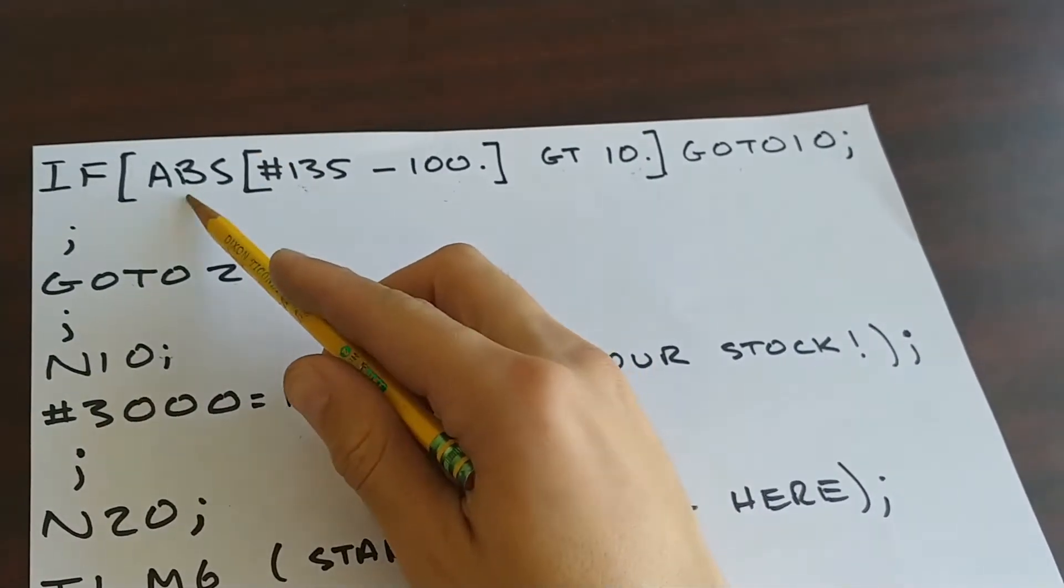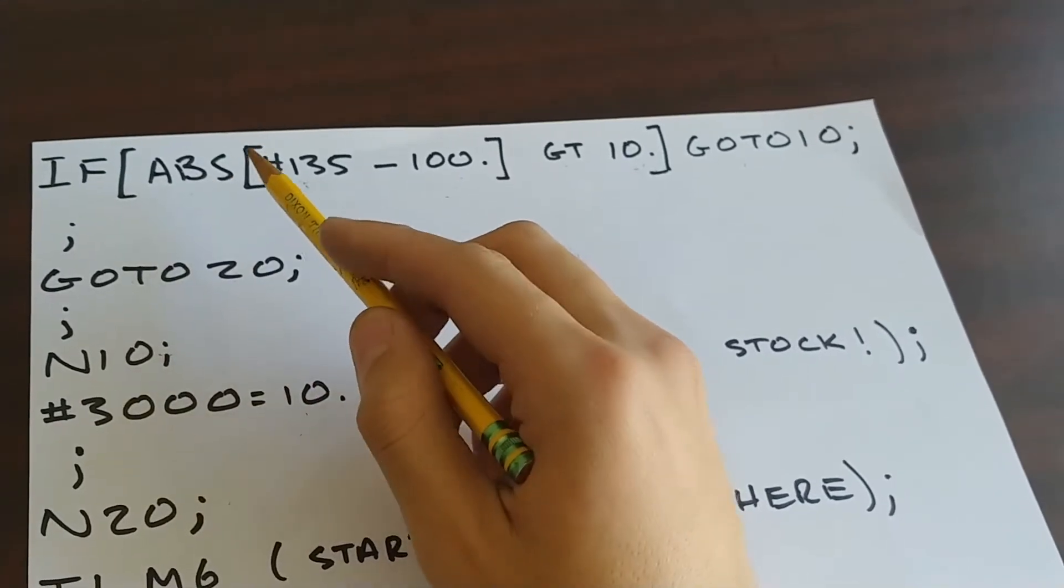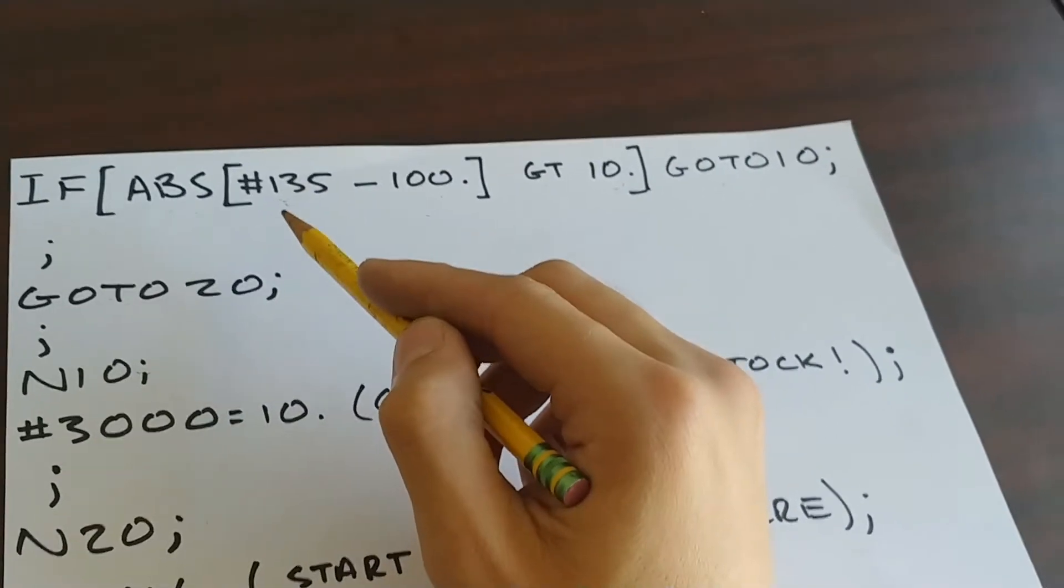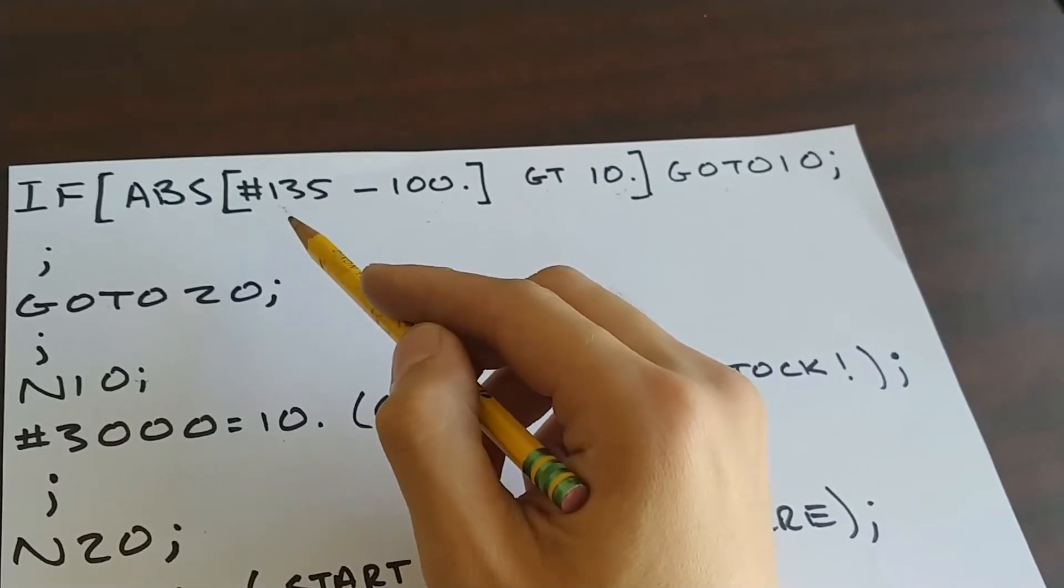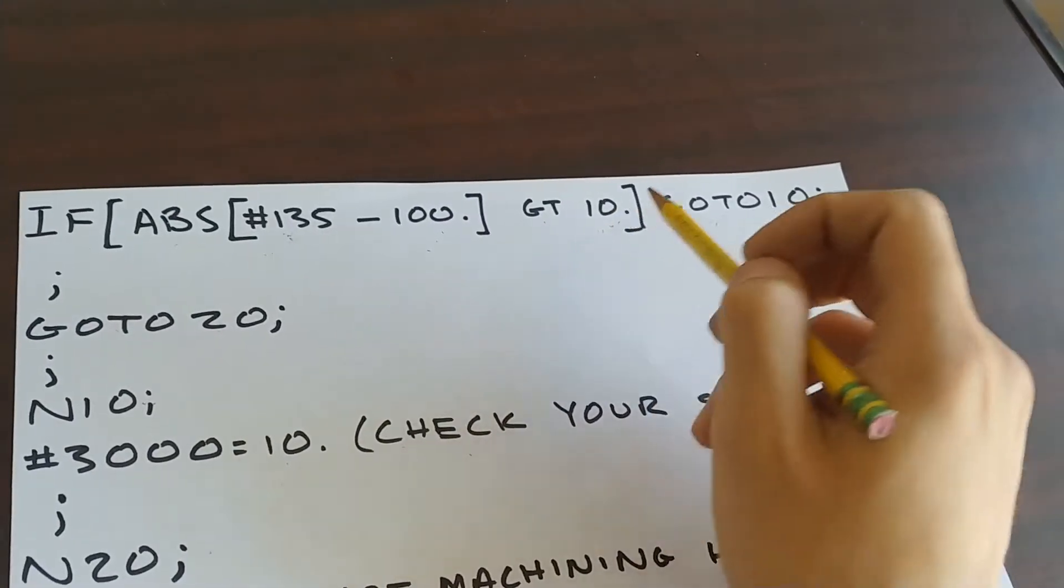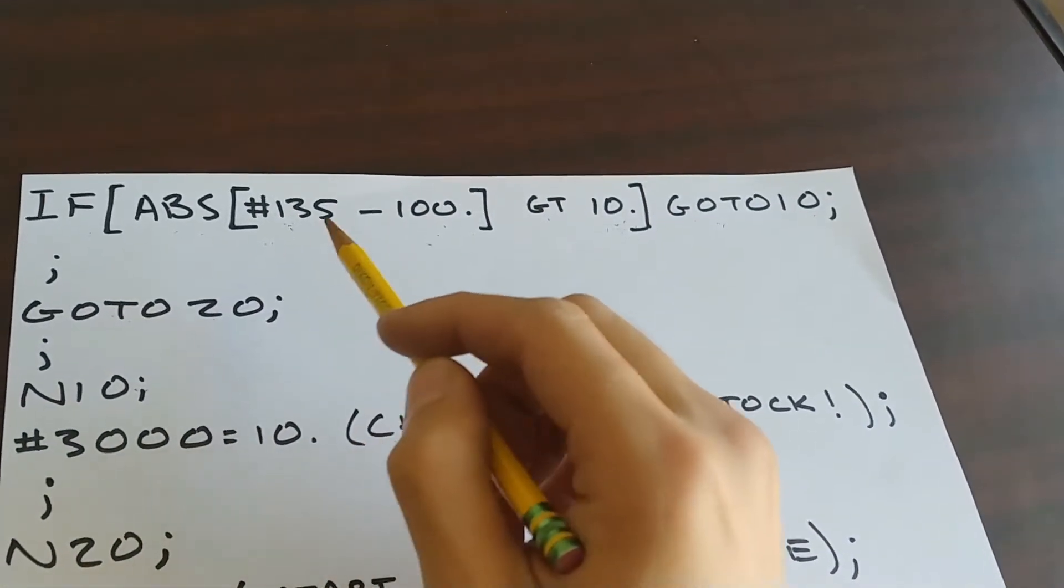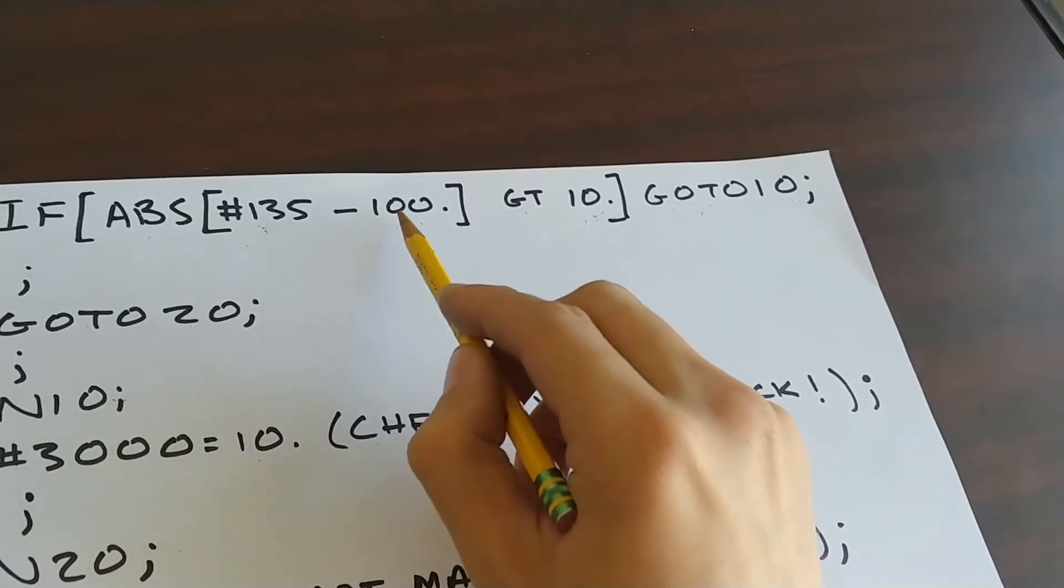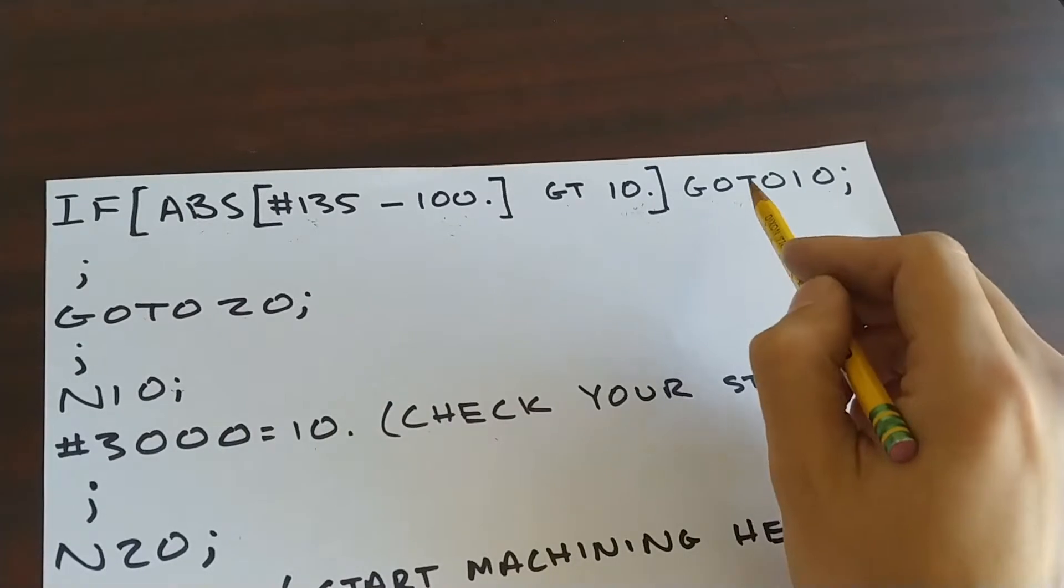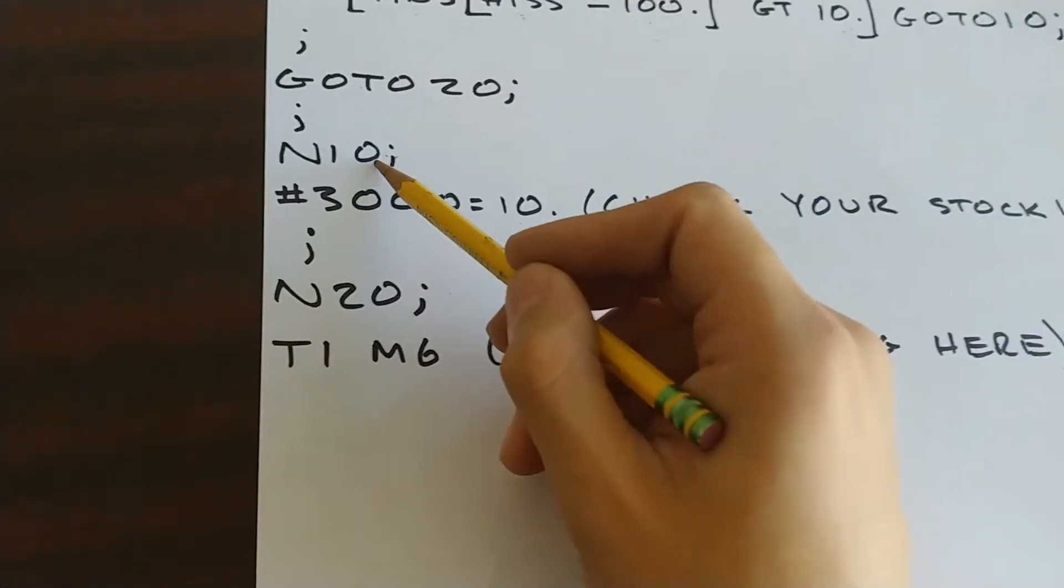Then I also put an absolute value so that I can get the tolerance above 100 or below 100. It doesn't matter which sign it is, the tolerance goes both ways. So my tolerance is 10 millimeters. So if the measured value is off from 100 by either positive or negative 10, then I will go to line 10, which is down here.